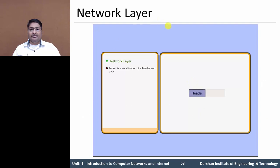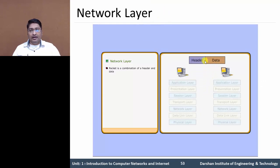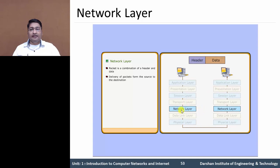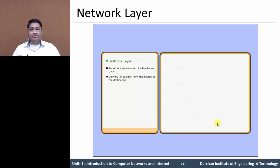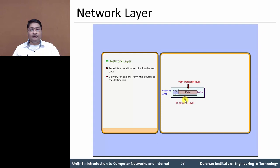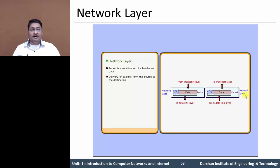A packet is a combination of header and data. These packets travel from source to destination, and the network layer is responsible for delivering them to the proper destination. Packets coming from the transport layer have header information H3 added at the network layer, then are passed to the data link layer. At the destination side, data comes from the data link layer, the header is removed at the network layer, and passed to the transport layer.